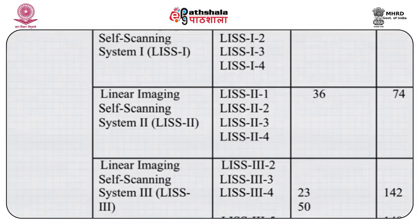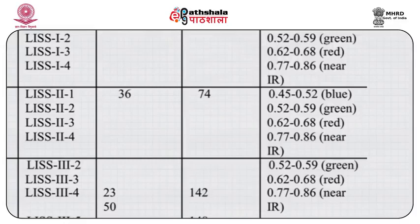Come to LISS 2. LISS 2 has channels LISS 2-1, 2-2, 2-3, and 2-4. The spatial resolution is 36 meters. Spectral bands include blue from 0.45–0.52, 0.52–0.59 for green, 0.62–0.68 red, and 0.77–0.86 near infrared.